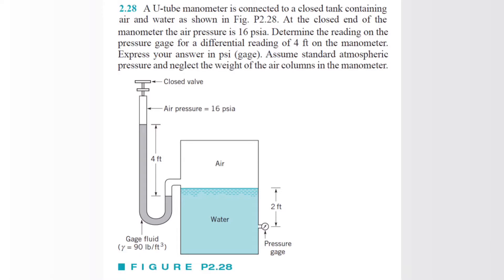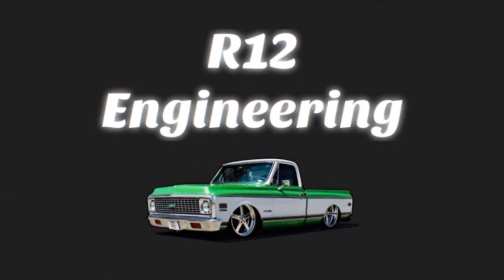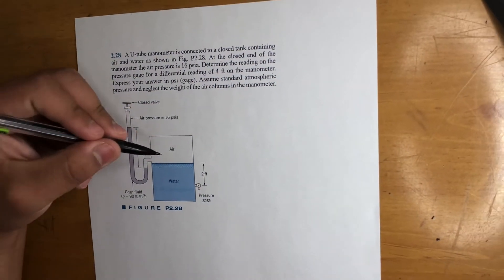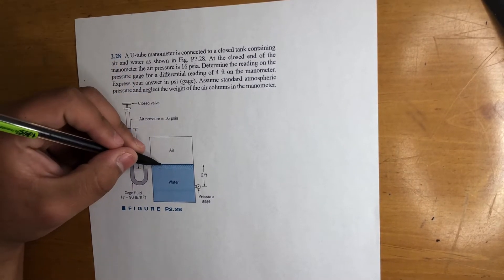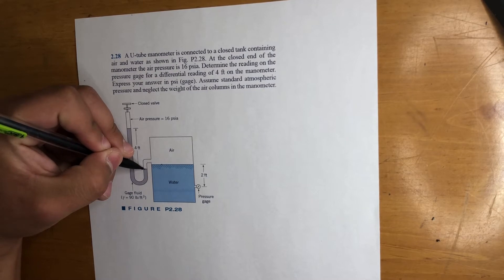Express your answer in psi gauge pressure. Assume standard atmospheric pressure and neglect the weight of the air. So that's cool, so no air in this case—well there is air, but we can neglect it, so this pressure is the same as this pressure right here. It's all it's saying, pretty much.